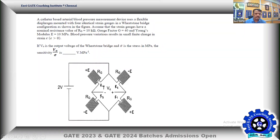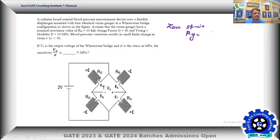This is a little related to the biomedical field. There is a blood pressure measurement device using a flexible diaphragm mounted with four identical strain gauges connected in a Wheatstone bridge as shown in the figure. The nominal resistance — that is, zero-strain resistance — of the strain gauges is given: R_g = 10 kilo-ohm without any applied strain, and the gauge factor (GF or SF) is given as 40.